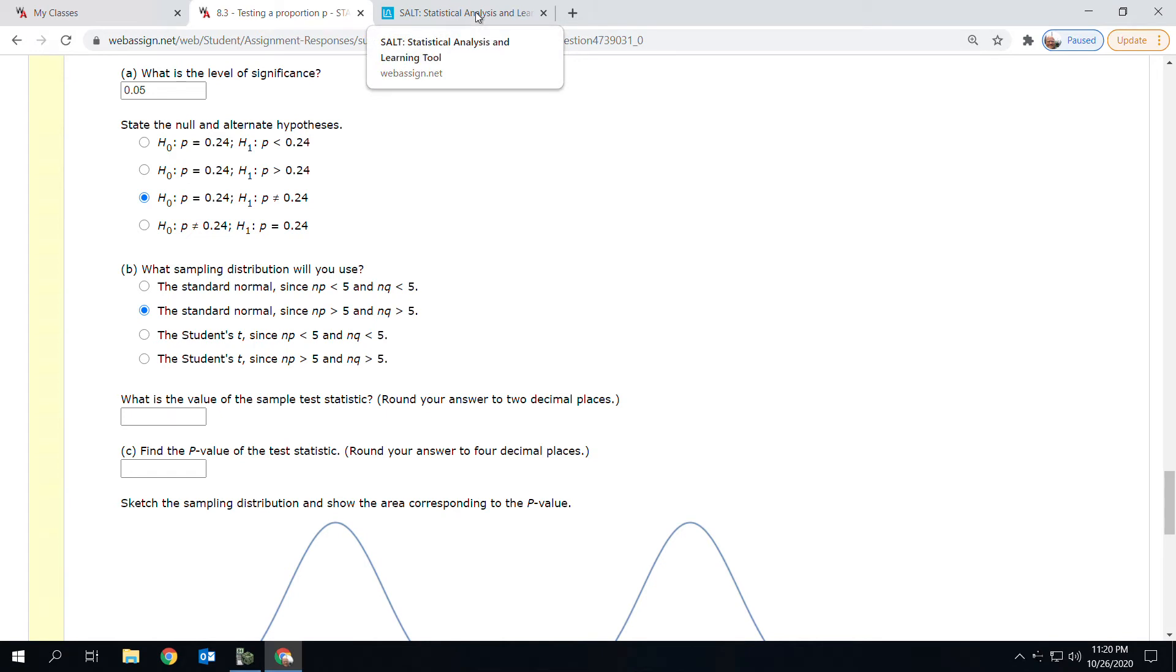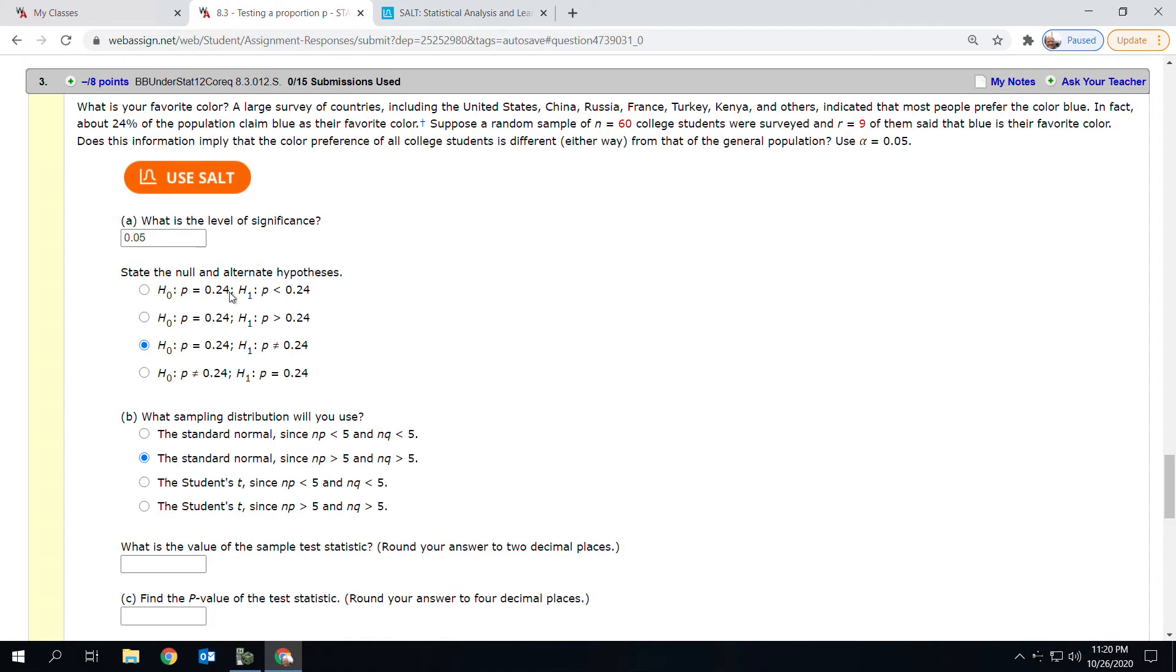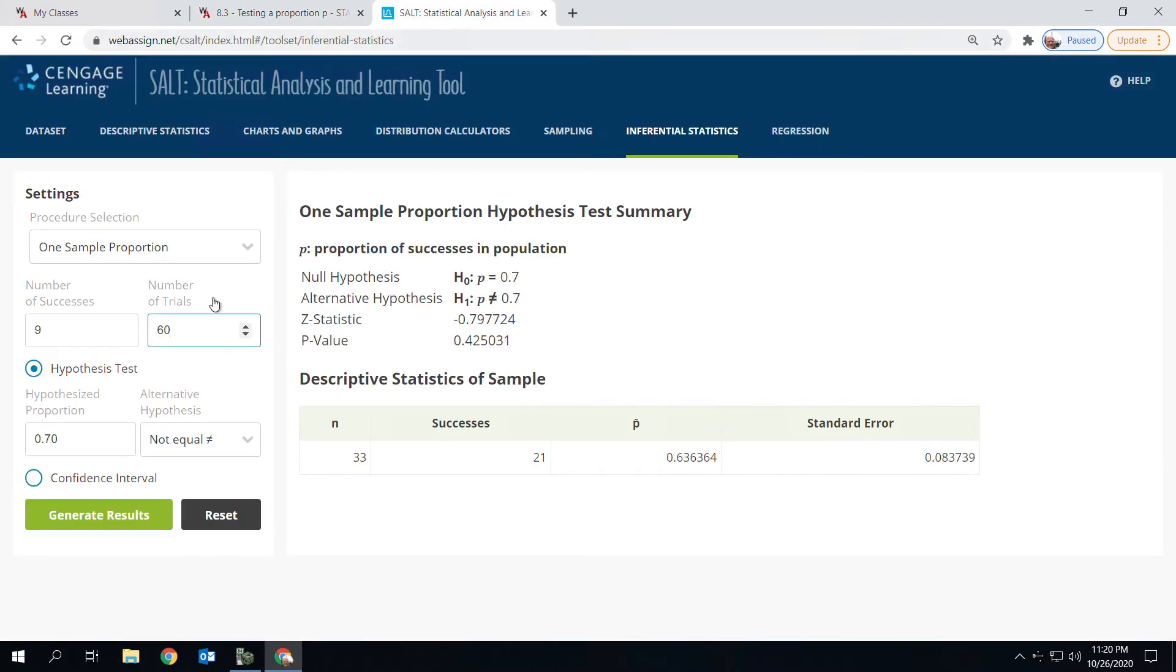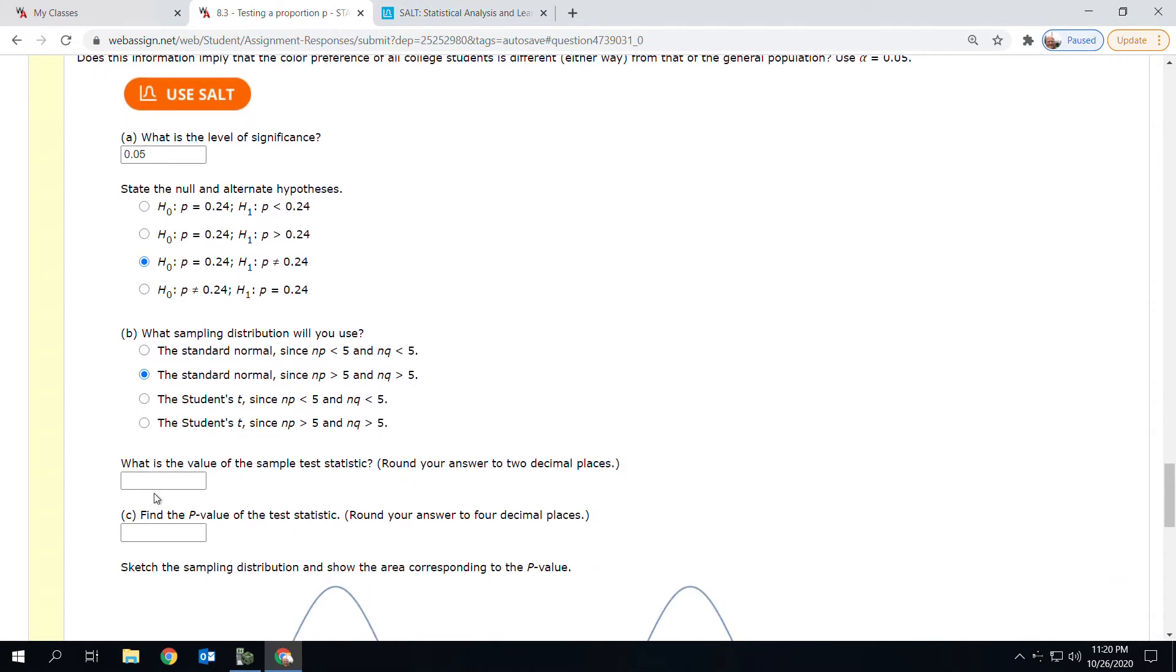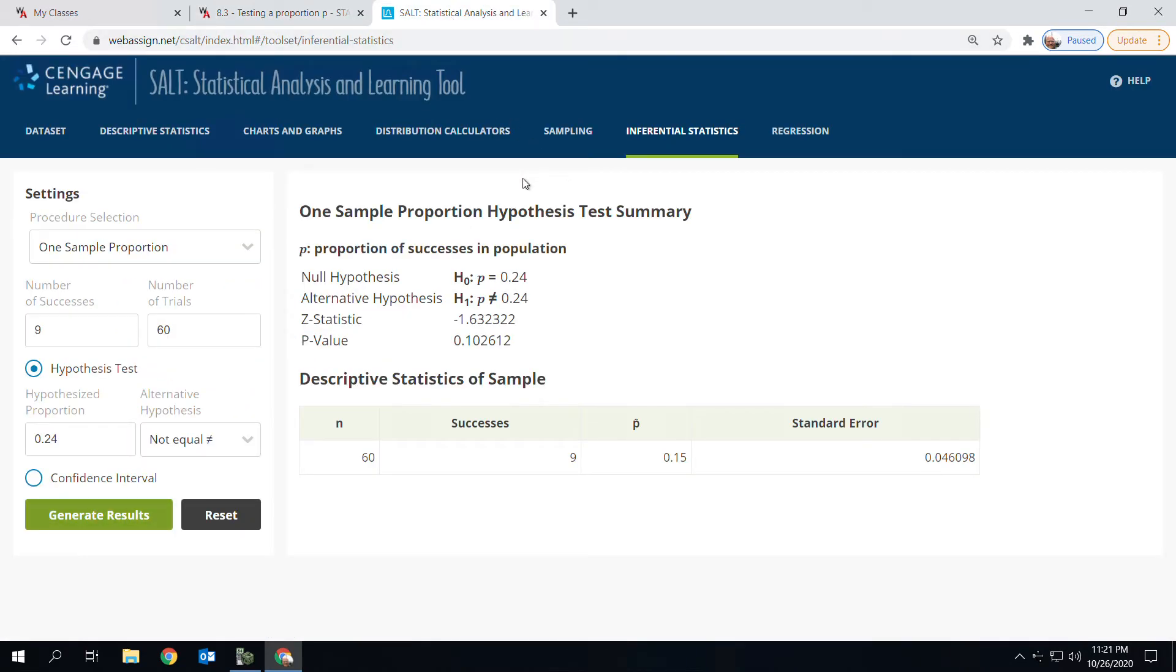We have 9 out of 60, so one sample proportion, 9 out of 60. Our null hypothesis is 0.24 not equal to, that stays the same from the previous problem. Generate results. So we have a z statistic of negative 1.63. And it appears Champ can only be thirsty during one of my videos, so that's him drinking water. He's a 20-pound dog, but he drinks like he's 80 pounds.